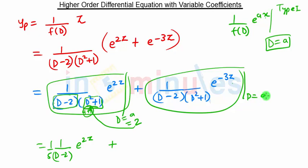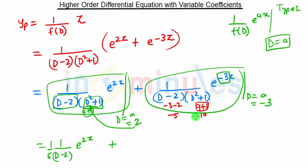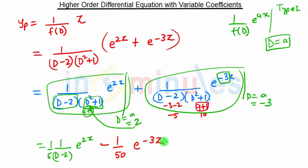For the second term, a is minus 3, so we substitute D equal to minus 3. We get (minus 3) squared which is 9, plus 1, giving 10, and (minus 3 minus 2) is minus 5. So 10 times minus 5 is minus 50, giving minus 1 upon 50 into e raised to minus 3z.